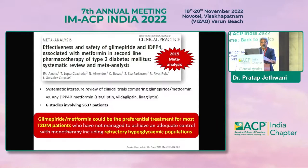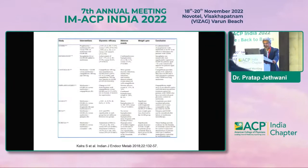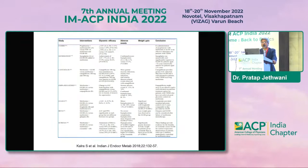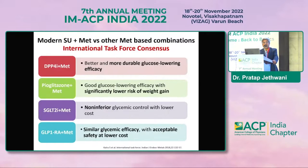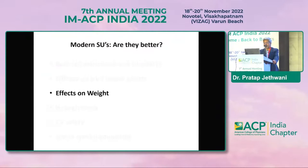Regarding glycemic efficacy compared to newer agents: versus DPP-4 inhibitors, sulfonylureas provide equivalent or better glycemic control. Across a variety of trials — from canagliflozin to liraglutide to glargine to saxagliptin — almost all trials demonstrated that glycemic efficacy is the same whether you use glimepiride, an SGLT2 inhibitor, a DPP-4 inhibitor, or liraglutide. Only canagliflozin 300mg or high-dose liraglutide showed better glycemic efficacy compared to glimepiride.